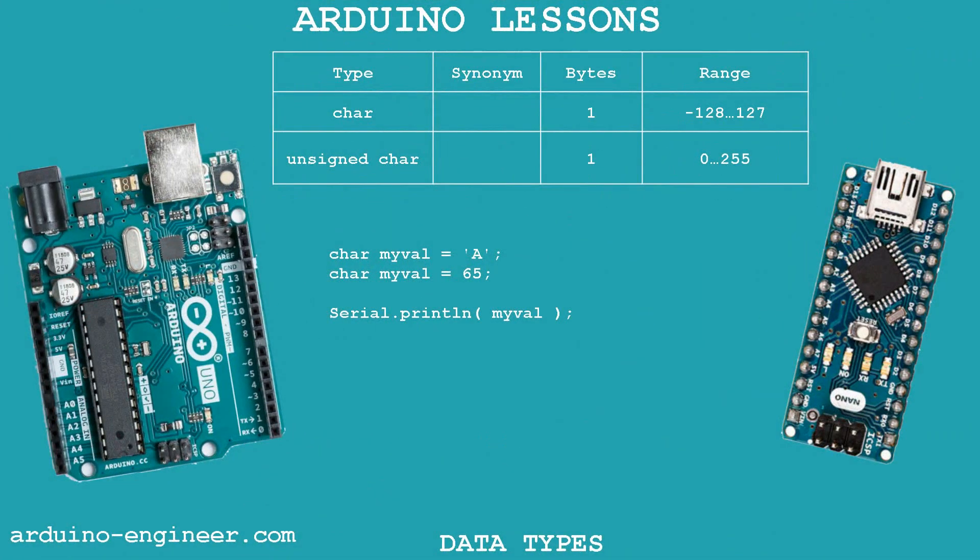The char type is designed to work with character data. One variable of this type can store only one text character. The value of a variable can be assigned both through a character in single quotes and a numeric equivalent. The numeric code corresponding to each supported character is laid down according to the ASCII table. This type is used for working with strings, displaying textual information on LCD indicators, and text messaging through the port monitor.